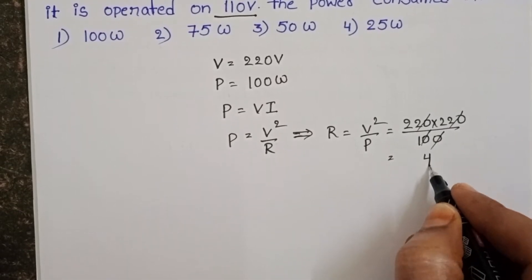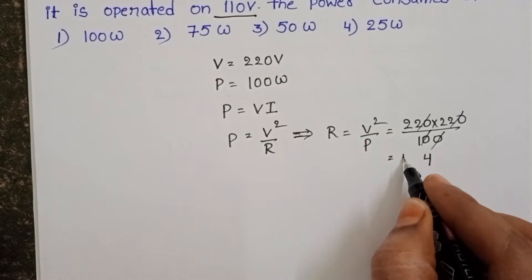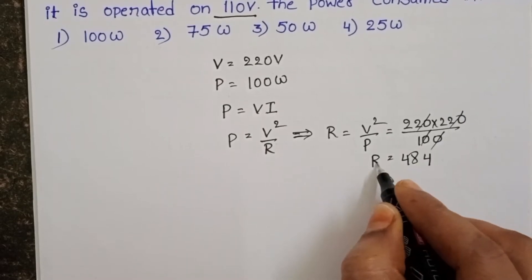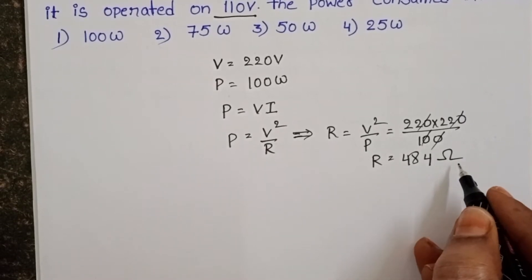22 times 24, again 44 plus 4, 48. Resistance of the bulb is 484 ohms.